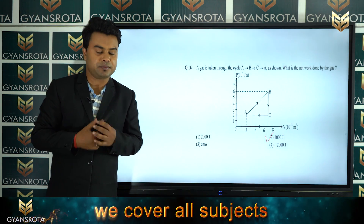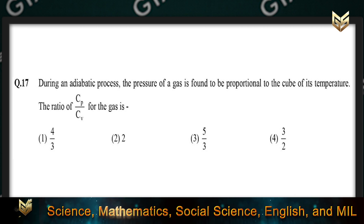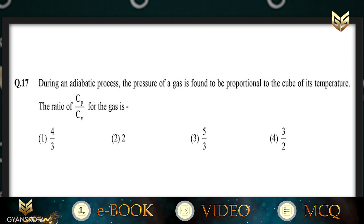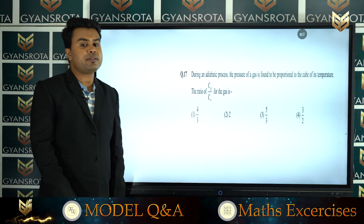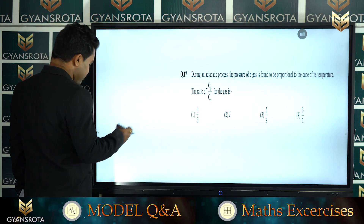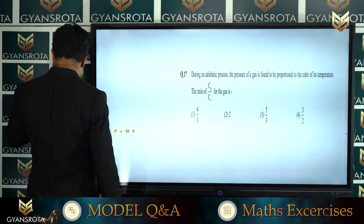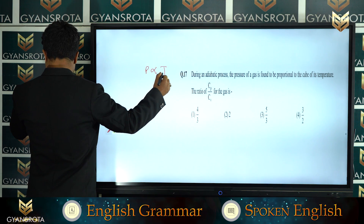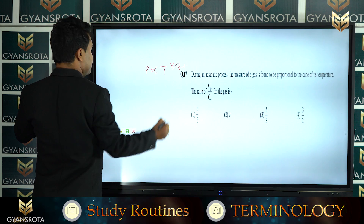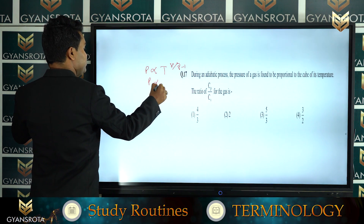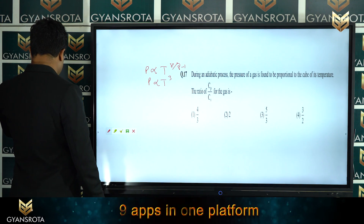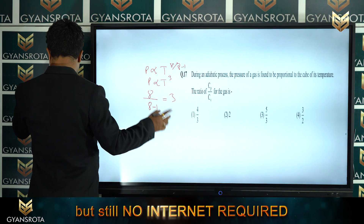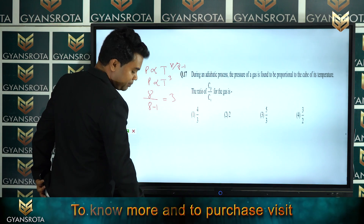Question 17: during an adiabatic process, the pressure of a gas is found to be proportional to the cube of its temperature. We need to find Cp/Cv. Using the relation P ∝ T^(γ/(γ−1)), and since P ∝ T³, we get γ/(γ−1) = 3. Solving this gives the answer as option 4.